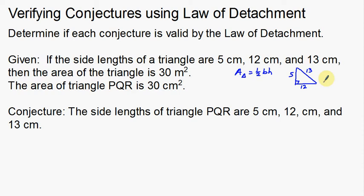But they're concluding that since the area of the triangle is 30 centimeters squared, the side lengths of the triangle have to be 5, 12, and 13 centimeters. Well, if you think about that, with a triangle you could actually come up with different side lengths other than 5 and 12 to get an area of 30.